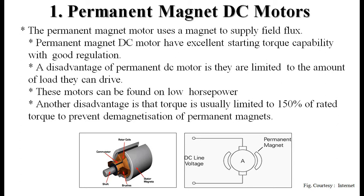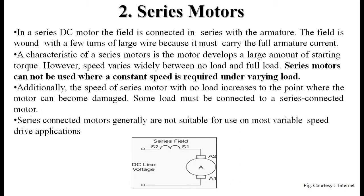The next type is the series DC motor. In a series DC motor, the field is connected in series with the armature. A1-A2 are the brushes, and S1-S2 is the coil in series with the armature winding. The field is wound with a few turns of large wire because it must carry the full armature current. A series motor develops a large amount of starting torque; however, speed varies widely between no-load and full-load conditions.